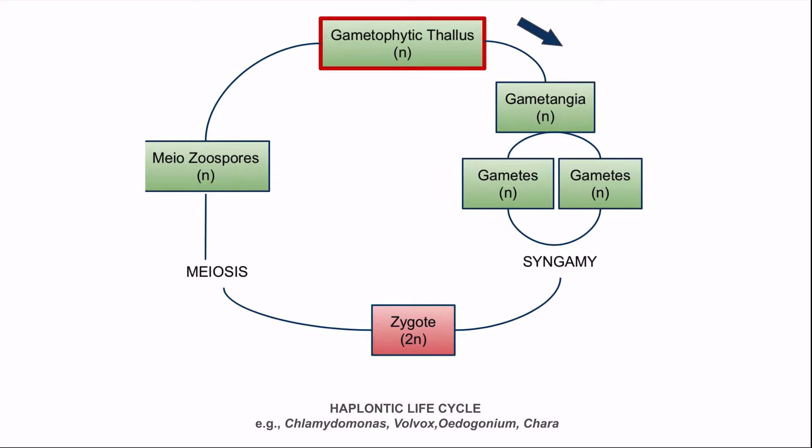So in the haplontic life cycle, only one type of thallus is found, which is gametophytic. All stages in the life cycle except the zygote are haploid.